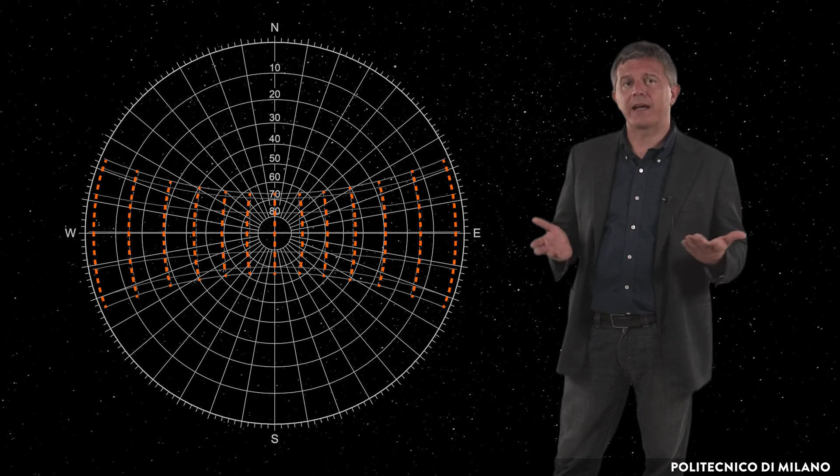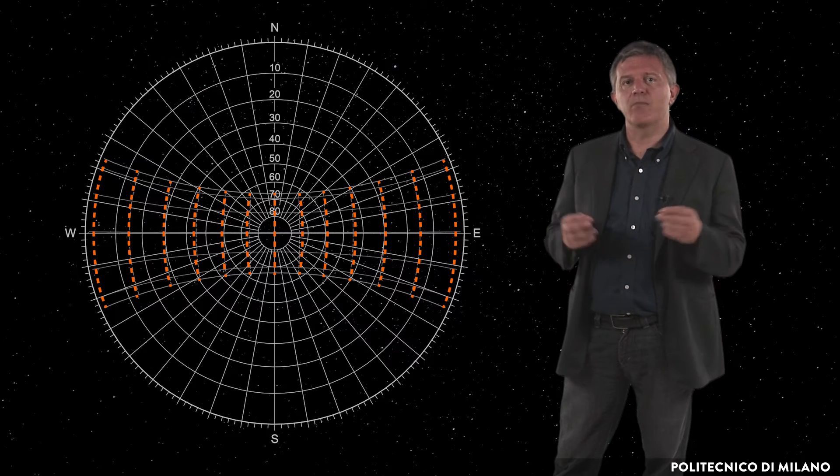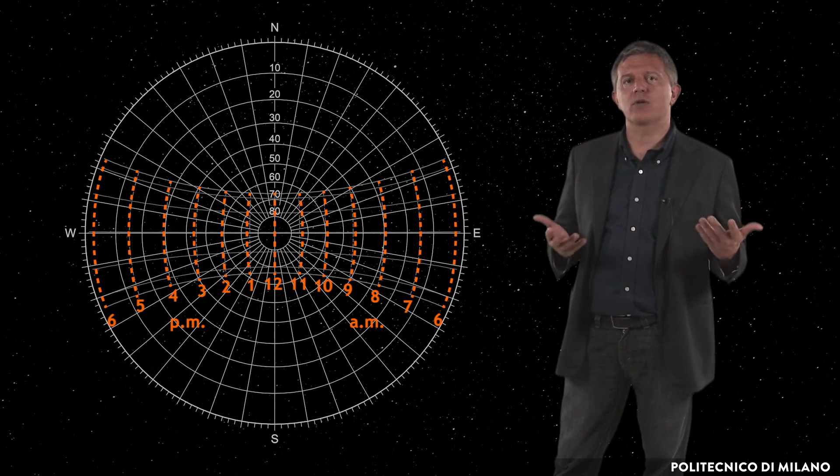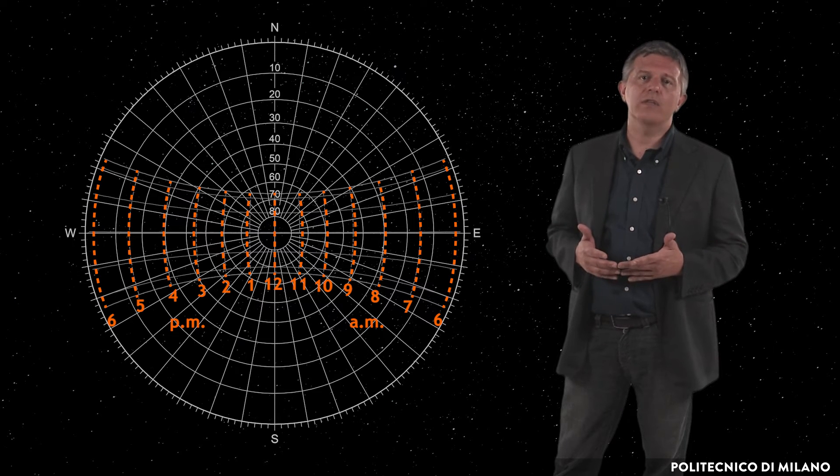The slightly curved vertical lines intersecting the seven monthly paths join the points corresponding to the same hour of the different months.